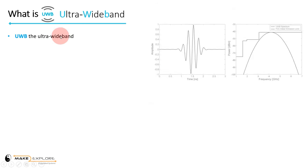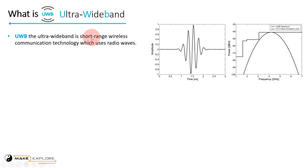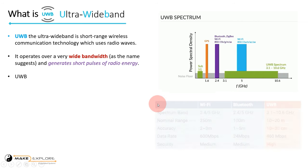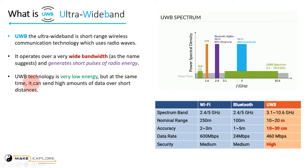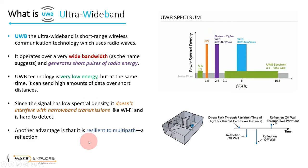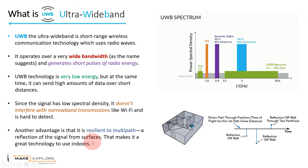So in a nutshell, UWB — the ultra-wideband — is a short-range wireless communication technology which uses radio waves. It operates over a very wide bandwidth, as the name suggests, and generates short pulses of radio energy. UWB technology is very low energy, but at the same time it can send high amounts of data over short distances. Since the signal has low spectral density, it doesn't interfere with narrowband transmissions like Wi-Fi, and is hard to detect. Another advantage is that it is resilient to multipath, making it a great technology to use indoors.